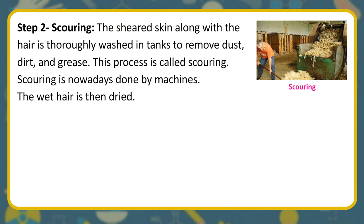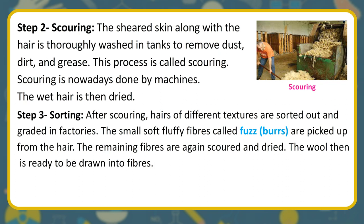Step 2 — Scouring: The sheared skin along with the hair is thoroughly washed in tanks to remove dust, dirt, and grease. This process is called scouring and is nowadays done by machines. The wet hair is then dried. Step 3 — Sorting: After scouring, hairs of different textures are sorted out and graded in factories. The small soft fluffy fibers called burrs are picked out from the hair. The remaining fibers are again scoured and dried, and the wool is then ready to be drawn into fibers.